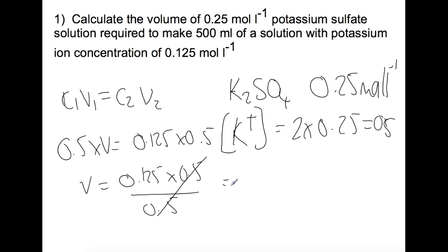Giving us a volume of 125 milliliters of the original solution to be diluted to give us 500 mils of a potassium ion concentration of 0.125 moles per liter.